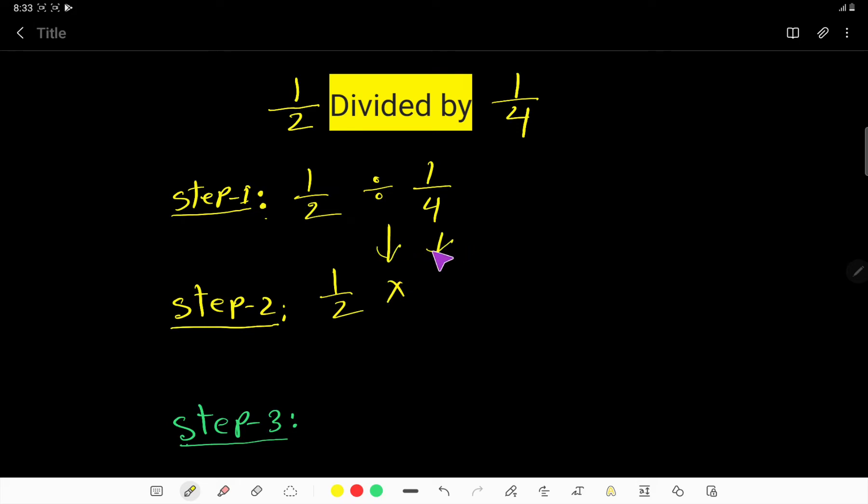So in the second step, I will change the division sign to a multiplication sign. I will take the reciprocal of the second fraction, that is 4 over 1. Just reciprocal fraction means you have to change the position of numerator and denominator.